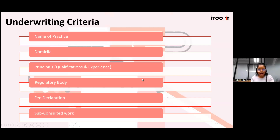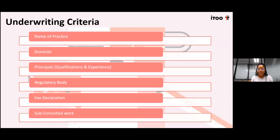Our underwriting criteria require a fully completed proposal form. We need the name of the practice, including all entities and subsidiaries that need to be covered under our policy - any branches or subsidiaries must be disclosed. We also look at where they are domiciled. As a South African insurer we cover all companies domiciled in South Africa. For anyone domiciled outside South Africa, we prefer they obtain local cover where they are domiciled because of those local regulations in various countries.